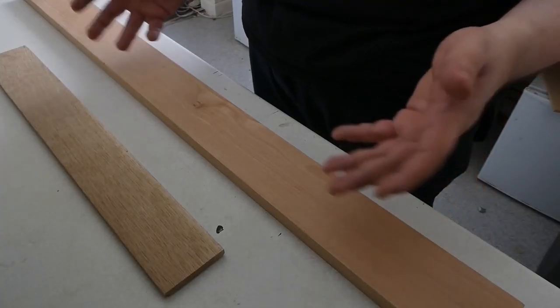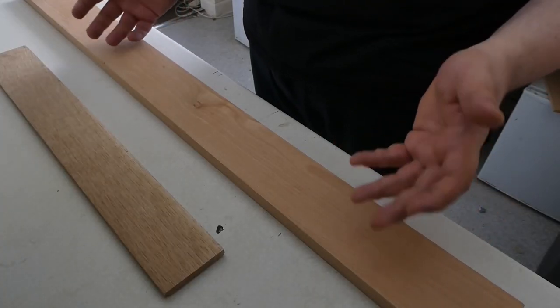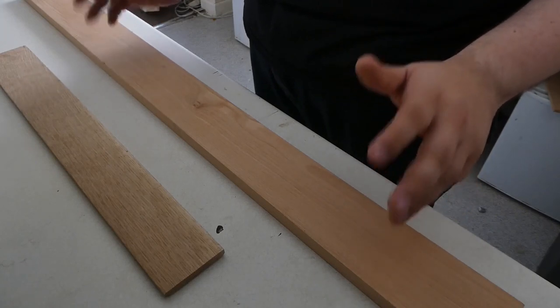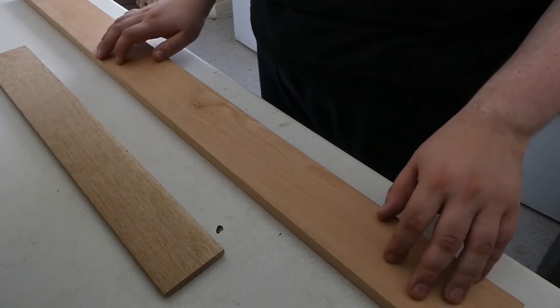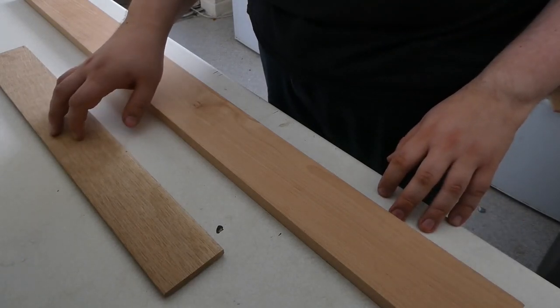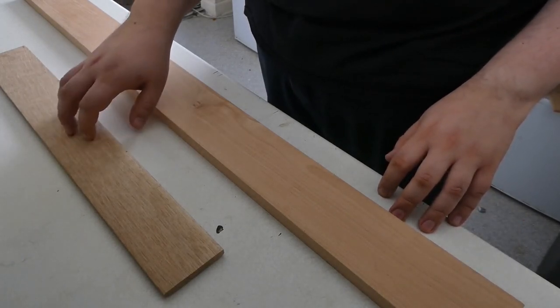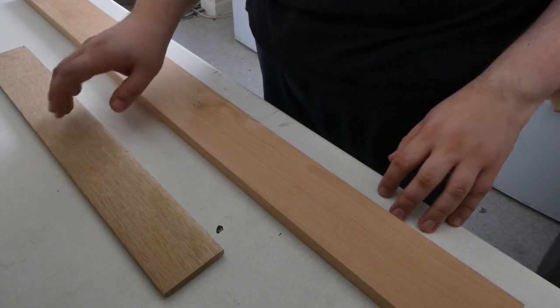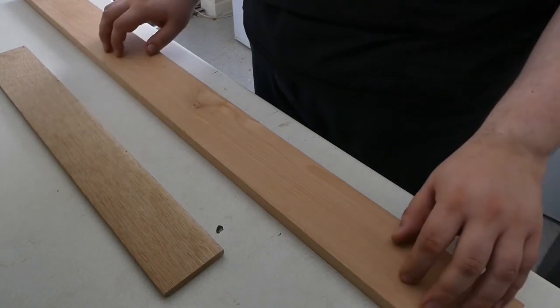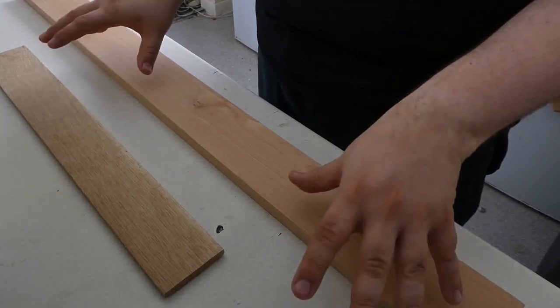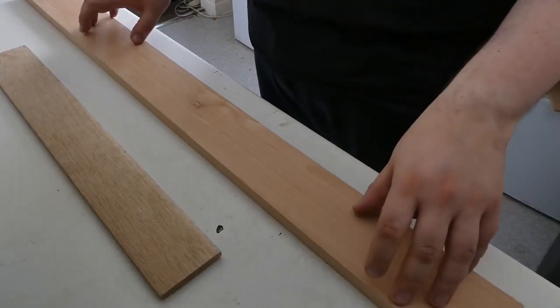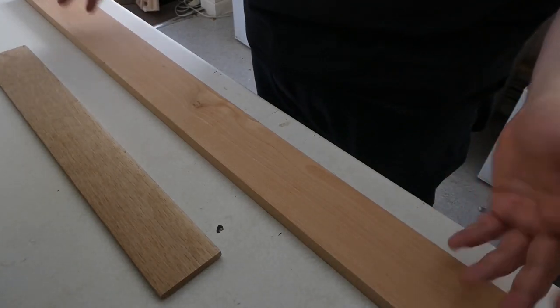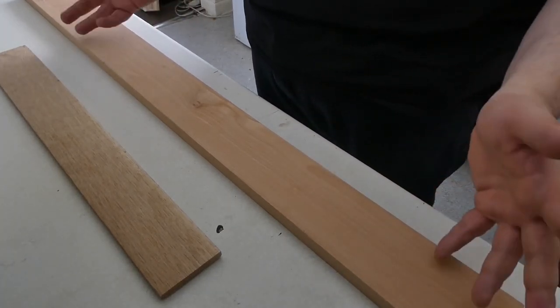This is Fagus Sylvatica, but everyone calls him Beech. And this is Quercus Alba, mostly known by her street name, Oak. He's tight-grained, she's open-grained. Together, they fight crack. They're going to be the neck and fretboard of my guitar.